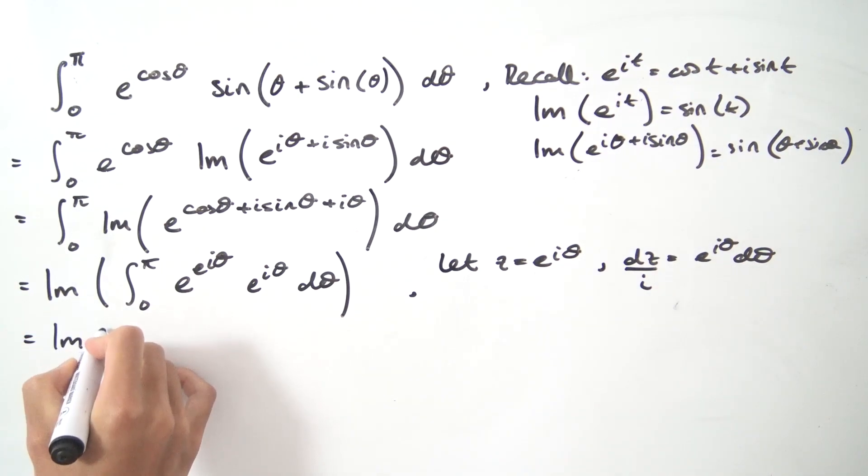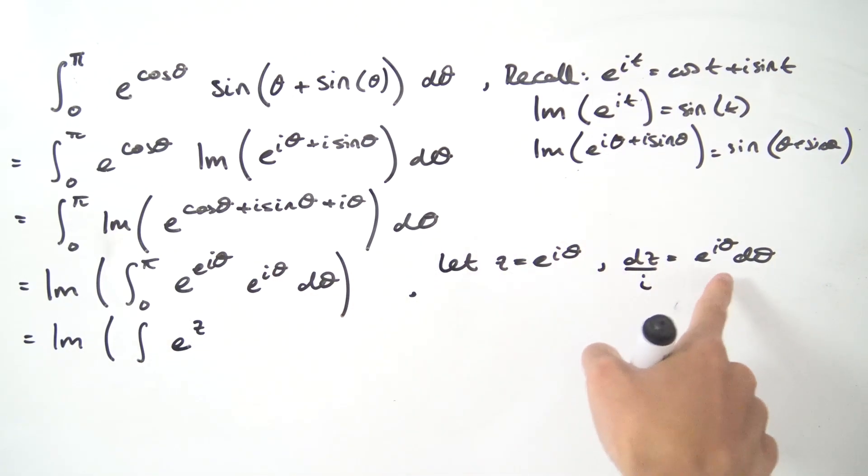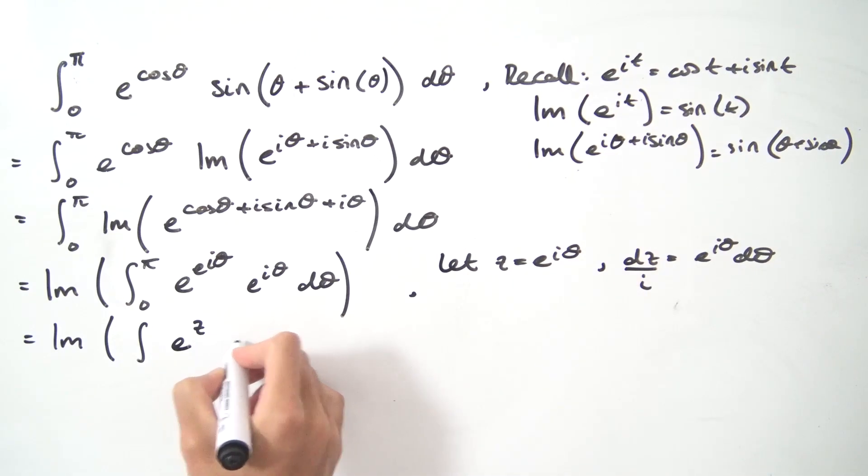That's going to give us the imaginary part of the integral. Now we're going to worry about the bounds later on, but here we're going to have e to the z, and then this e to the i theta d theta just becomes dz over i, so times dz and then divided by i.